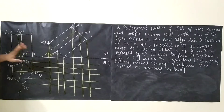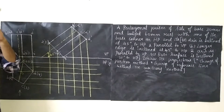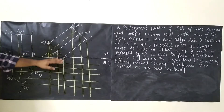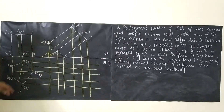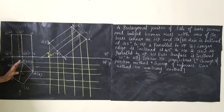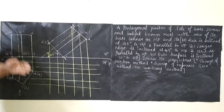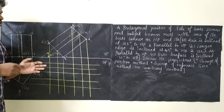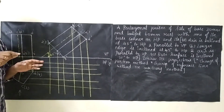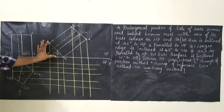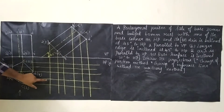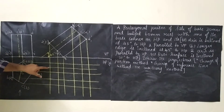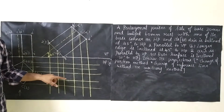Extend the axis till the reference line. From the front view (inclined position), extend all three edge points vertically downward. From the top view pentagon, extend all five corners horizontally. Where these vertical and horizontal projection lines intersect, mark those points — numerals 1 to 5 will appear here, and alphabets A to E will appear at corresponding intersections, giving us the final top view.